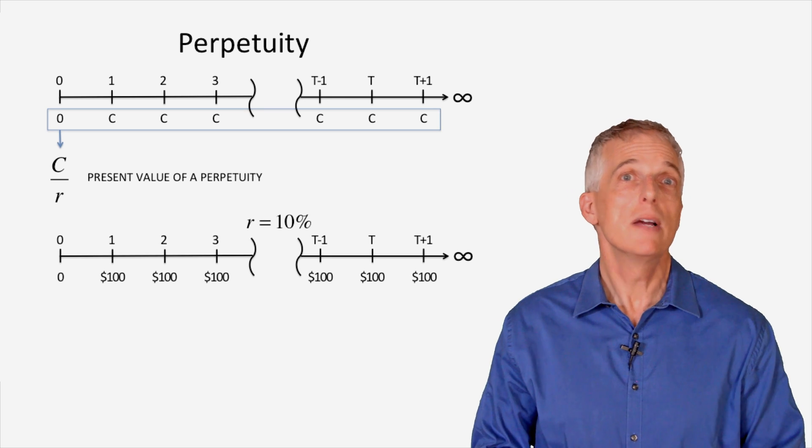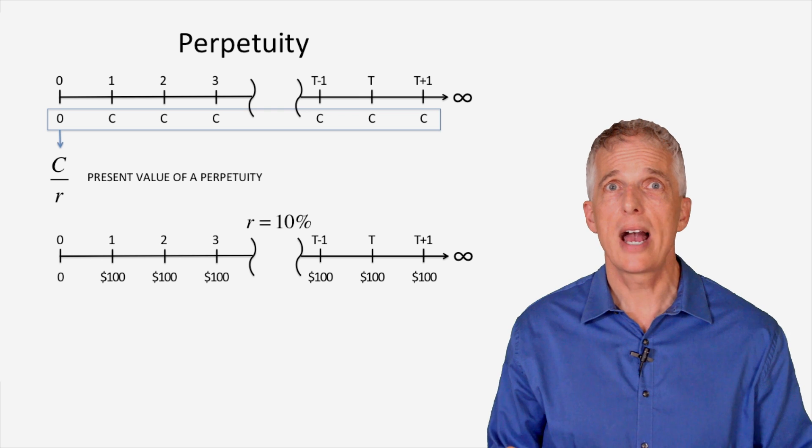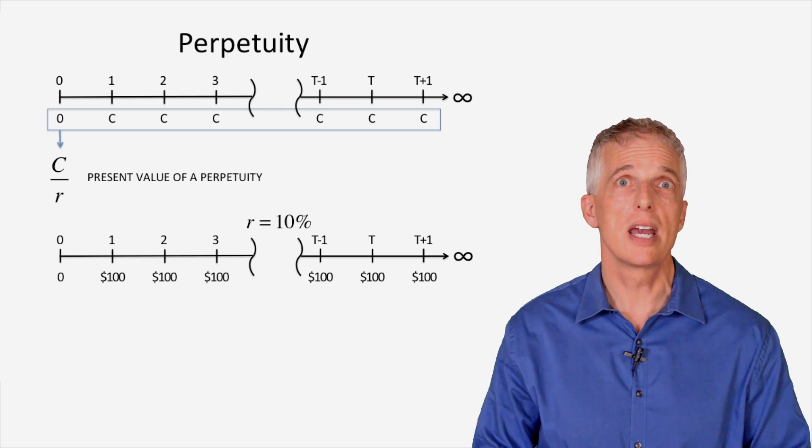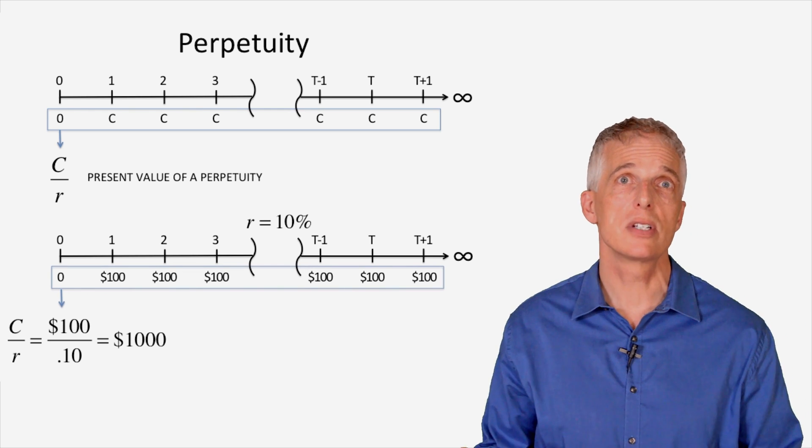For example, if you can invest at an interest rate of 10%, the present value of $100 cash flow beginning one year from today and continuing forever is $100 divided by 10%, or $1,000.